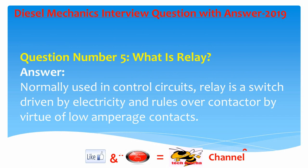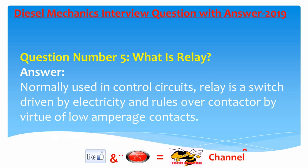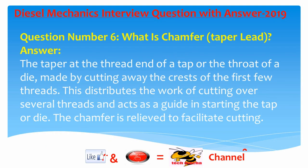Question number five: What is a relay? Answer: Normally used in control circuits, a relay is a switch driven by electricity that controls a contactor by virtue of low amperage contacts.